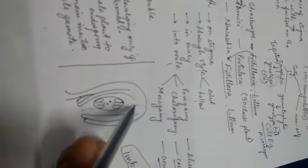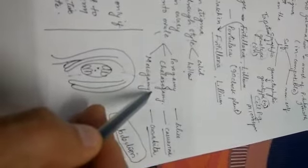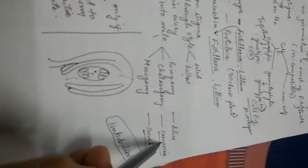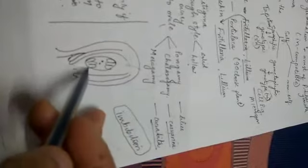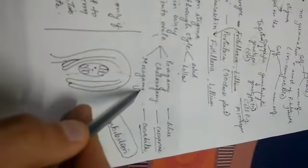Sometimes in some exceptional plants, pollen tube enters from the chalazal end. This end is called as chalazal end, so in that case it is called chalazogamy. Chalazogamy is quite common in plants like Casuarina but very few plants. And if a pollen tube enters through the integuments, it is called mesogamy. Example is cucurbits.